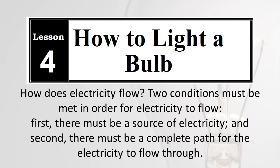Lesson 4: How to Light a Bulb. How does electricity flow? Two conditions must be met in order for electricity to flow: first, there must be a source of electricity; and second, there must be a complete path for the electricity to flow through.